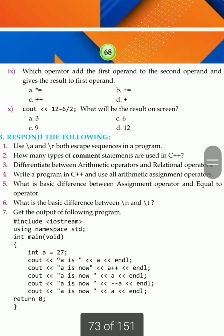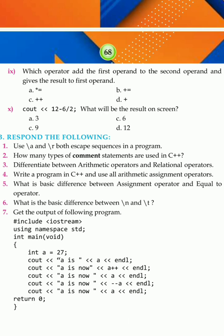Question 9: Which operator adds the first operand to the second operand and gives the result to the first operand? The options are: A (*=), B (+=), C (++), and D (+). All these symbols are used in programming. The answer here is option B — the plus-equals (+=) symbol.